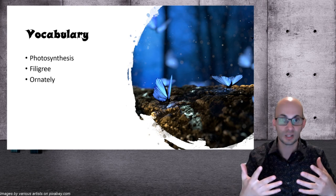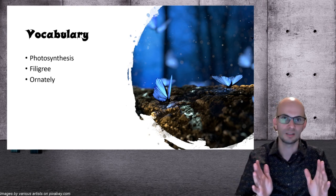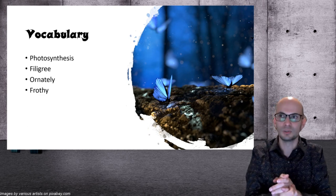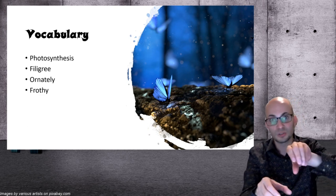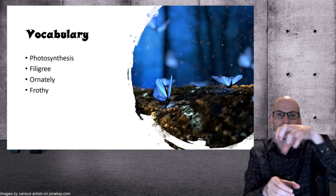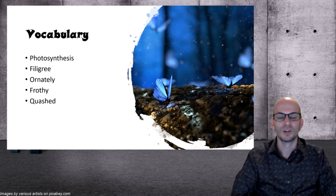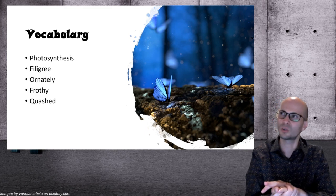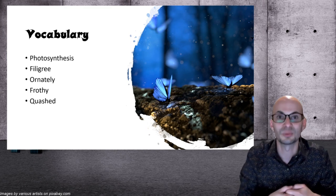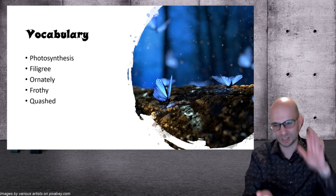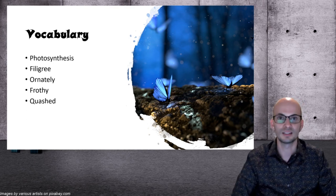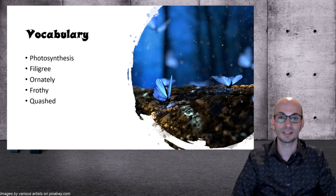Ornately is another like detailed, beautifully decorated with gems and gold. Frothy is like bubbles. If you pour soda too fast, the bubbles come out, we call that froth. Quashed is like squashed, squished. Jared quashed his hopes or his regret. He felt so bad for lying to the dwarves, but he squashed it. He quashed it and said, don't worry about lying to these guys. They kidnapped my sister.